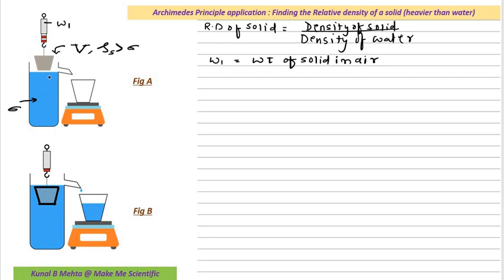I am gently lowering this apparatus down in such a way that the whole body submerges inside. What is going to happen? The water level is going to rise, and the water is going to overflow and get collected over here — this water is called water displaced. We already know that the volume of the solid will be the same as the volume of the water displaced. Let us assume the buoyant force acting upward is B.